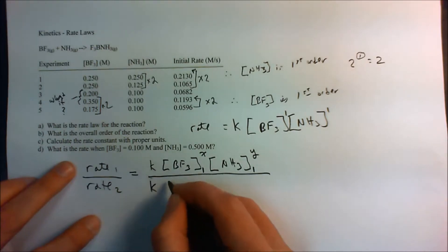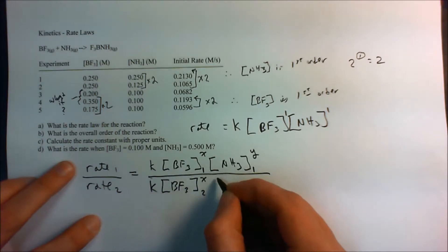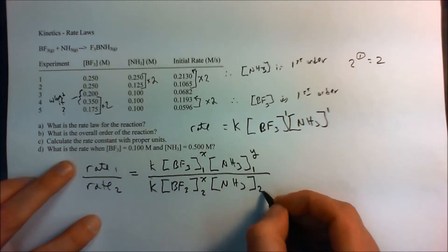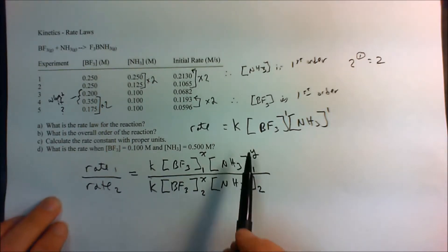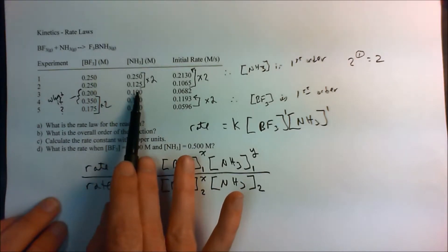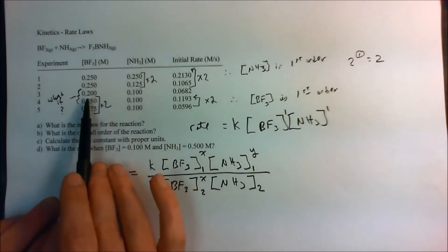And we can divide that by a second set of concentrations to the X. And the only requirement is that we hold one of these pairs constant, which is what we did right here. We held ammonia constant at 0.1, and all we changed was concentration of BF3.